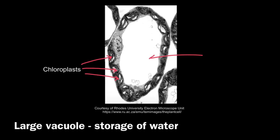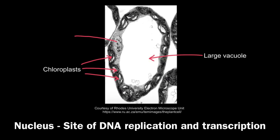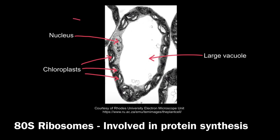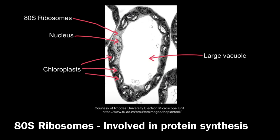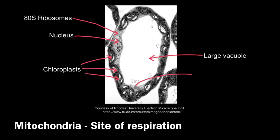We can also see the large vacuole, which takes up the majority of space in the middle of the cell and is used for the storage of water. Also labeled here is the nucleus, which is where you find the DNA — it's the site of DNA replication and transcription. Within the cytoplasm there are tiny dots, which are the 80S ribosomes; palisade cells are eukaryotic, so they have 80S ribosomes, involved in protein synthesis.